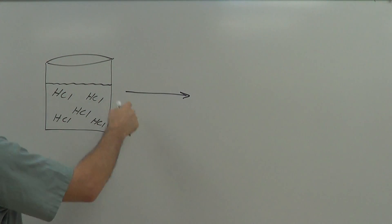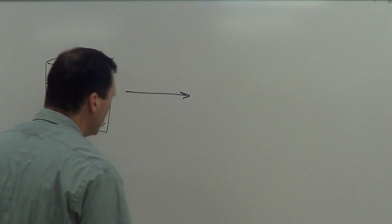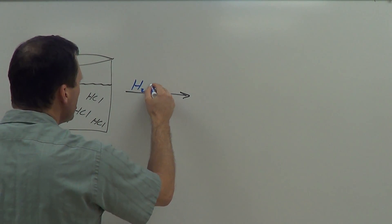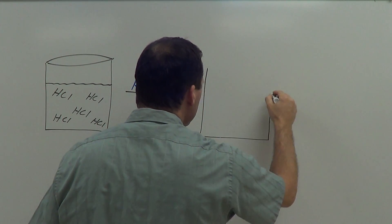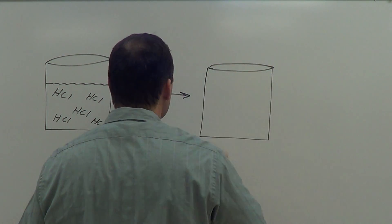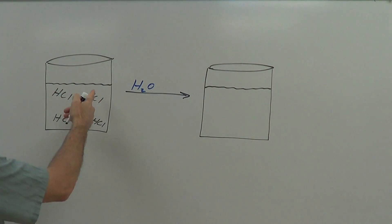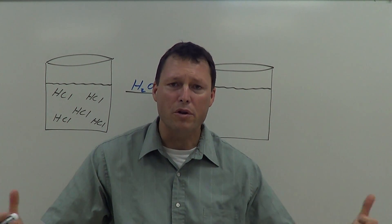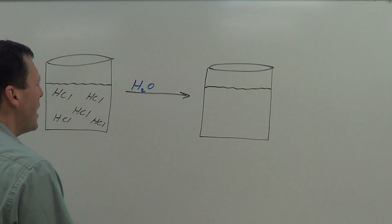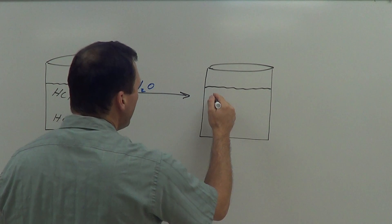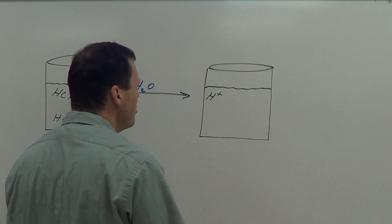We're going to take this hydrogen chloride solution and add water to it. When we add water to the solution, it becomes an acid. The reason is that water is going to break apart the hydrogen and chlorine atoms from each other — breaking that chemical bond unevenly, with an unequal distribution of electrons. The hydrogen is going to end up losing an electron and becoming a positive hydrogen ion.